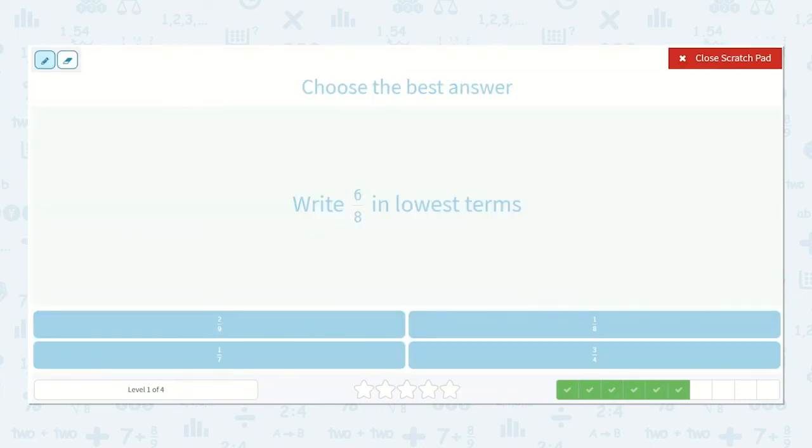Write 6 eighths in lowest terms. Here we have 6 eighths. So I see that we could divide the top and bottom by 2. Could we divide it by anything larger? Let's see. 3? Nope. 4? Nope. 5? No. And not 6. All right. So it's just 2. 6 divided by 2 is 3. 8 divided by 2 is 4. So the answer is 3 fourths.